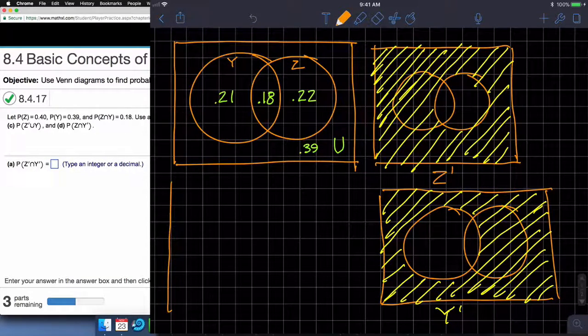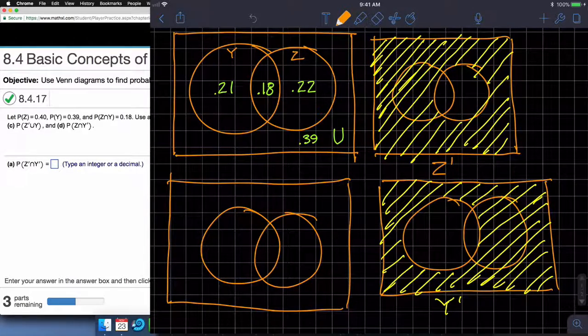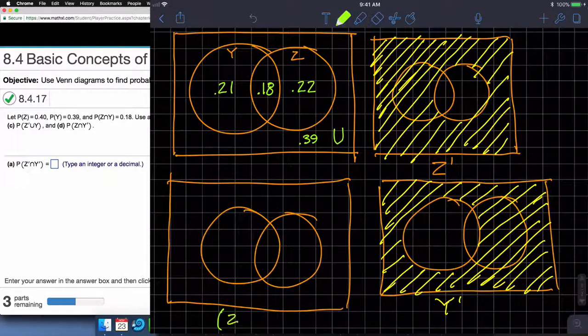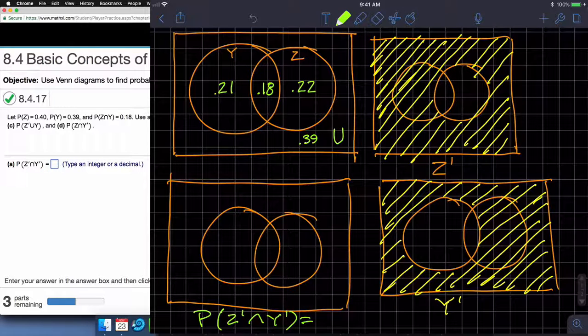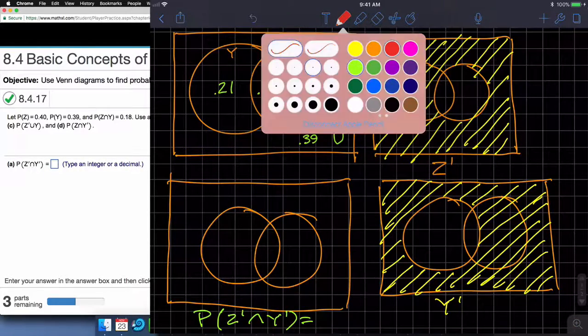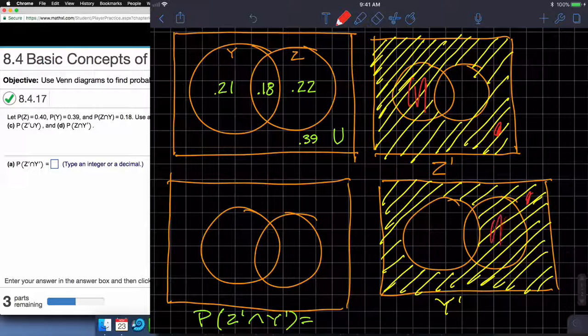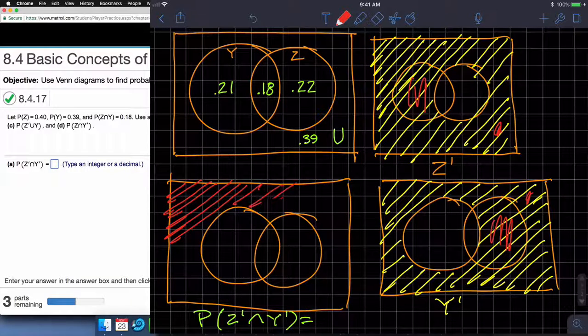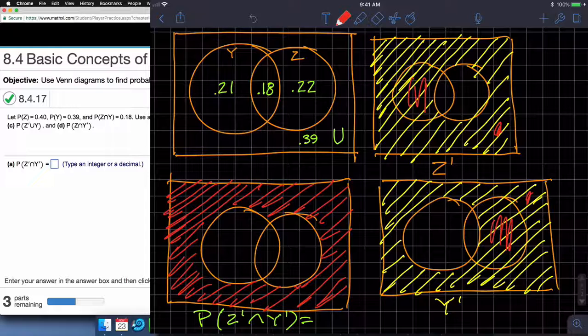And so we're going to take a look at the very first question that they ask us, which is the intersection of Z complement and Y complement, and what's the probability of that? So first, let's look at the picture. Z complement, Y complement, the intersection of those two. So we're really talking about what portions are in both this shaded region and this shaded region. Well, this part is not, and this part is not. So that leads me to believe that the intersection of that stuff is just the universe. So that's the intersection. Now, what's the probability of that intersection? It is 0.39.